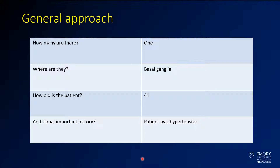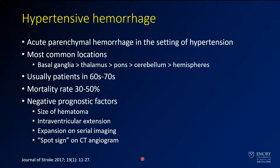This is a relatively young patient — only 41 years old. Some additional history: this patient was hypertensive. So when we're thinking about that, this ends up being a hypertensive hemorrhage. You've got an acute hemorrhage in the setting of hypertension.